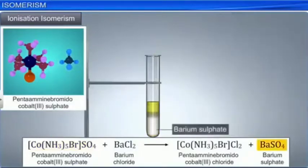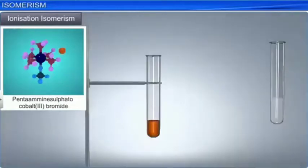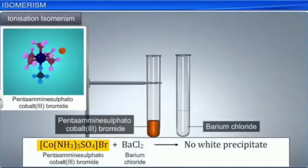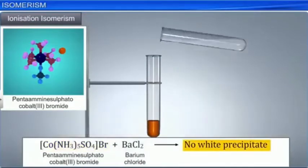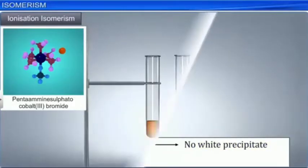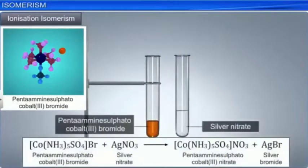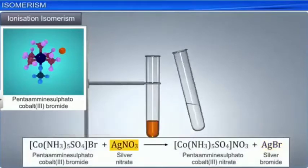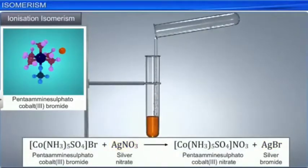By contrast, the other isomer does not give a positive sulfate test. It does give a pale yellow precipitate of silver bromide with silver nitrate, confirming the presence of free bromide ions. Other examples of ionization isomers are tetraamine dichloridoplatinum(4)-bromide and tetraamine dibromidoplatinum(4)-chloride.